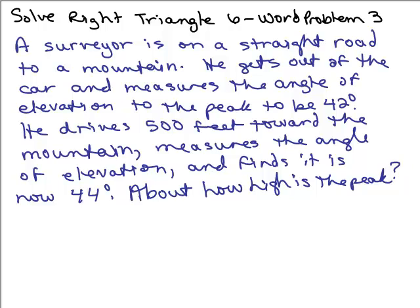We're going to use the technique of solving right triangles and a bit more algebra, including how to solve for two variables, to do this word problem. A surveyor is on a straight road to a mountain. He gets out of the car and measures the angle of elevation to the peak to be 42 degrees. He drives 500 feet toward the mountain, measures the angle of elevation again, and finds it is now 44 degrees. About how high is the peak?